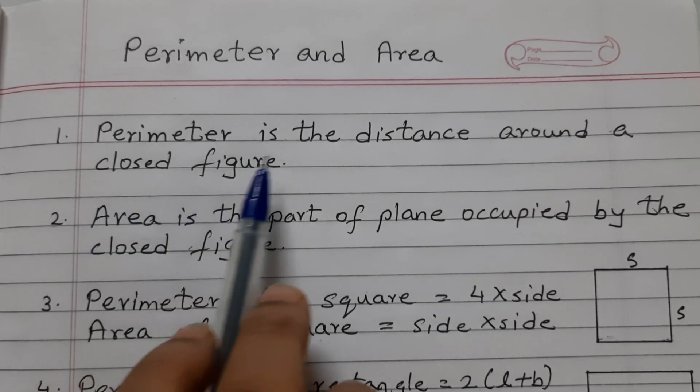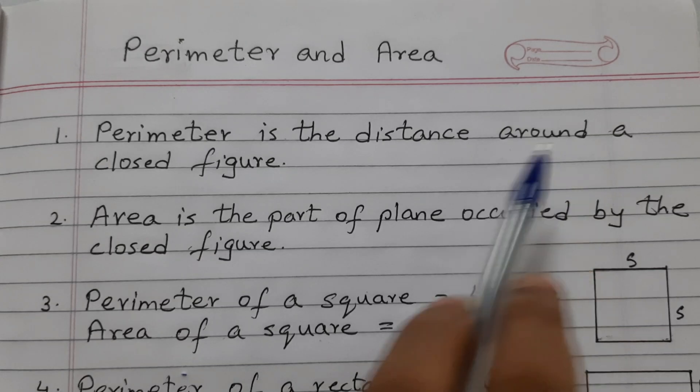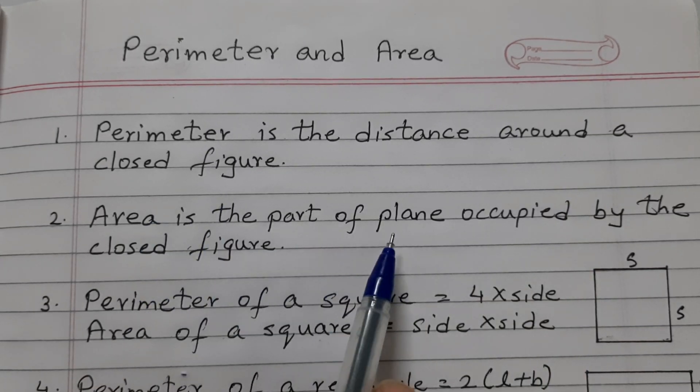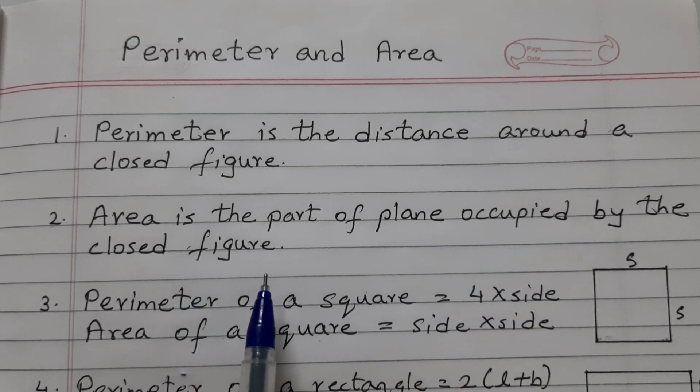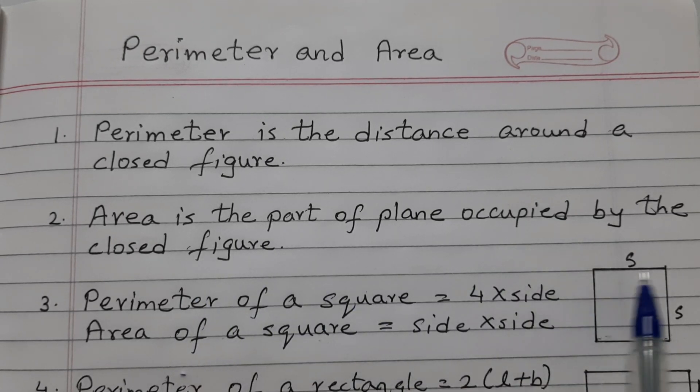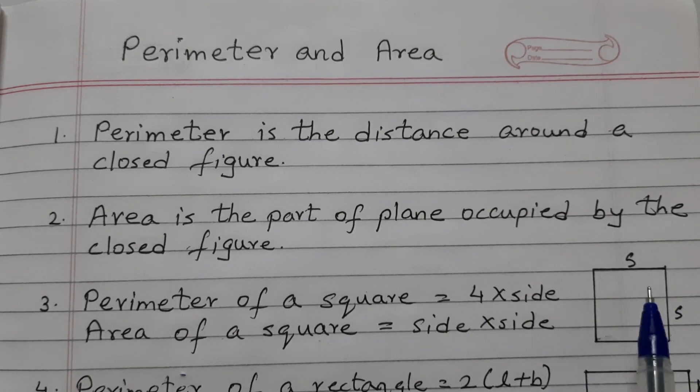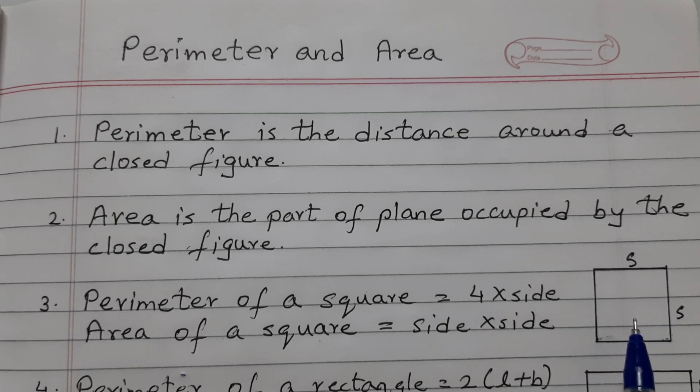Perimeter as you know is the distance around a closed figure. Area is the part of plane occupied by the closed figure. So if this is a square, this length, the boundary is the perimeter and if you shade this square, then this space occupied is the area.